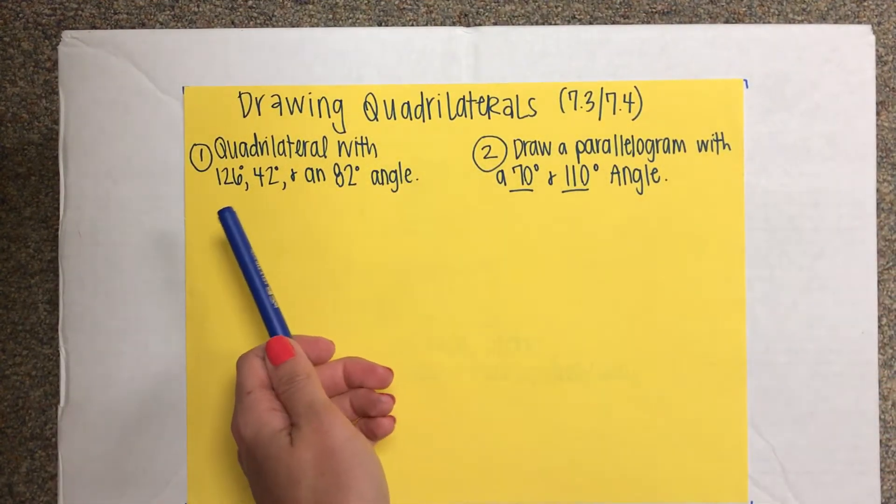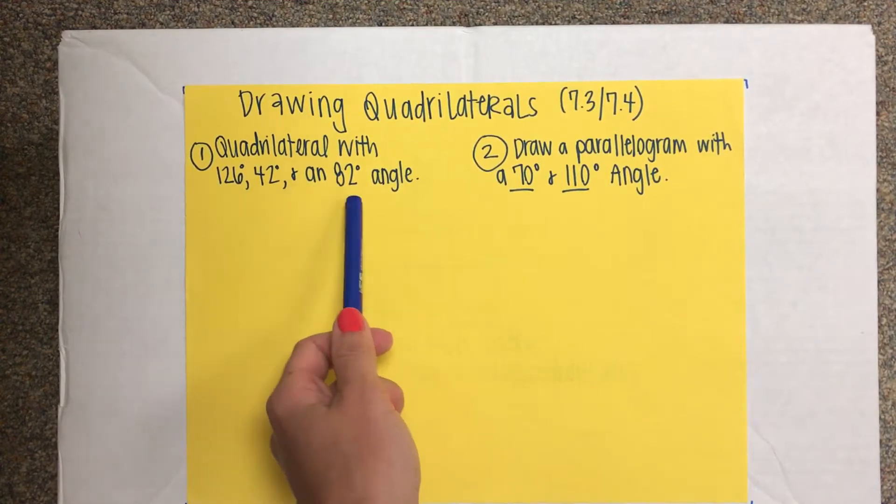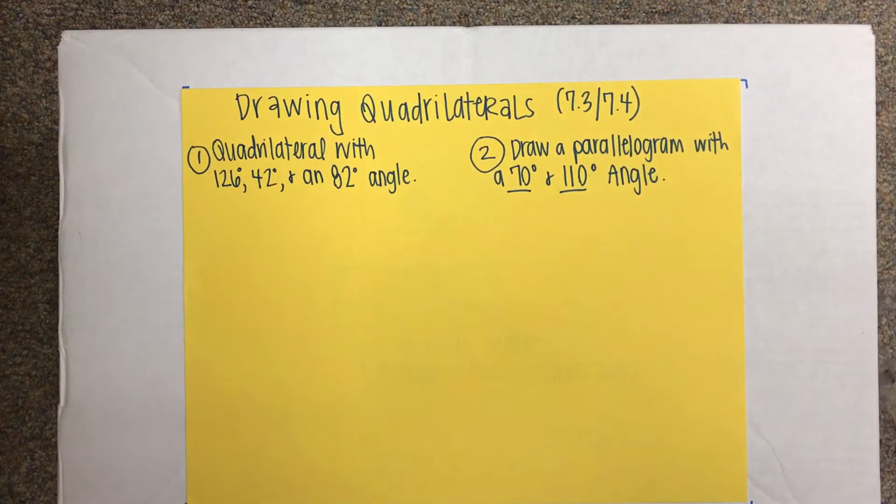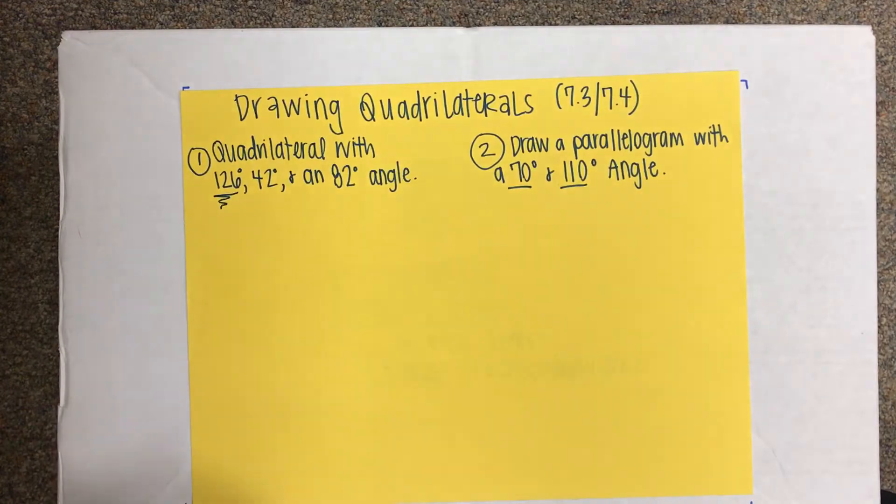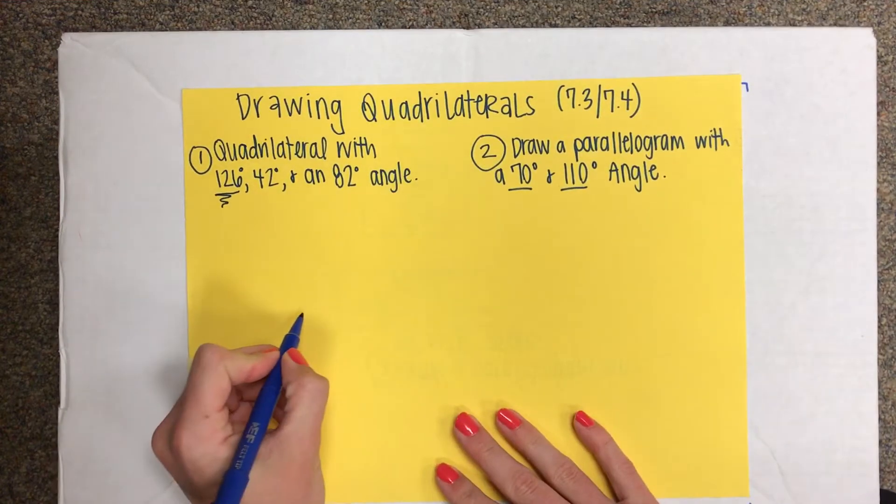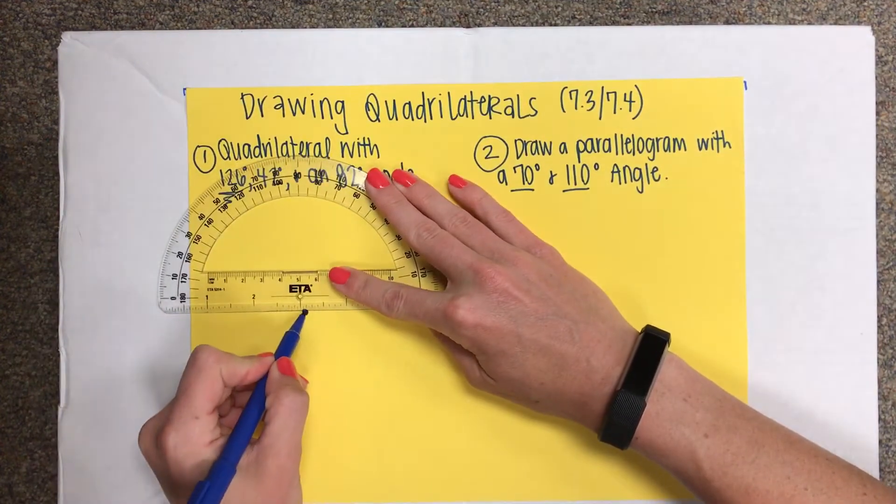It says draw a quadrilateral with 126 degrees, 42 degrees, and an 82 degree angle. The first thing you always want to start off with is your largest degree measurement. Remember, you start off by drawing angles with a dot and a straight line.